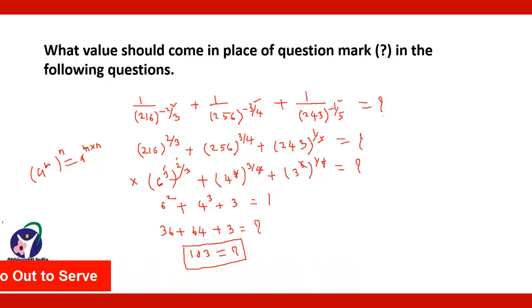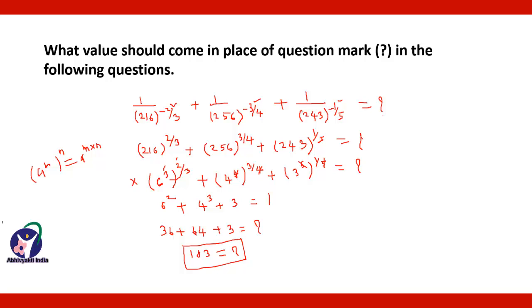You can do it mentally: 3 and 3 cancel, giving 6 squared which is 36. 256 written as 4 to the power 4 — the 4s cancel giving 4 cubed. And likewise for the third term.